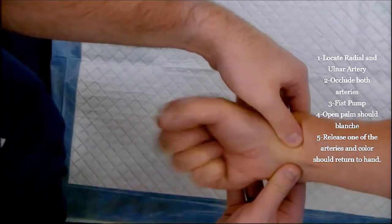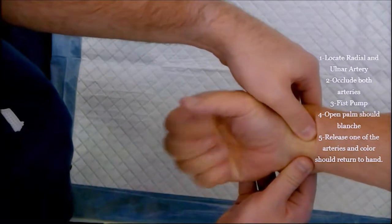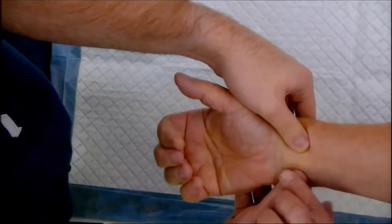Locate the radial and ulnar artery and occlude both vessels. Have the patient clench and unclench their hands. Make sure the vessels are occluded.